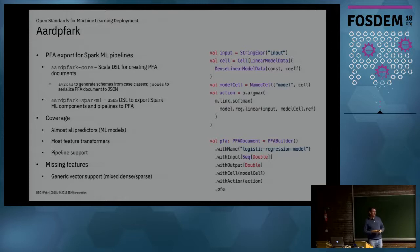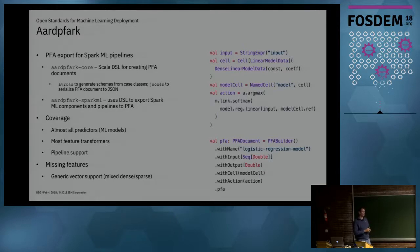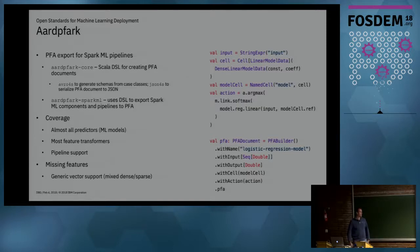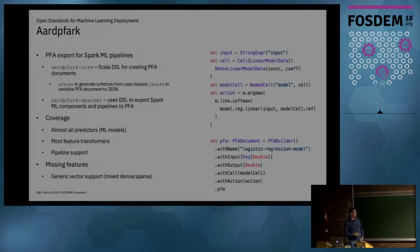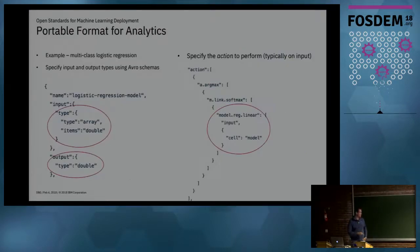There are reference implementations for PFA engines in Java, but they don't really allow you to write PFA documents or export from a model into a PFA document. That's what I've created for Spark ML — we call it Aardvark, or 'artfak'. I'm from South Africa, where an aardvark is called an earth pig, like an anteater. The core of it is a Scala DSL for creating PFA, and Spark Aardvark uses that same DSL to export Spark ML pipelines.